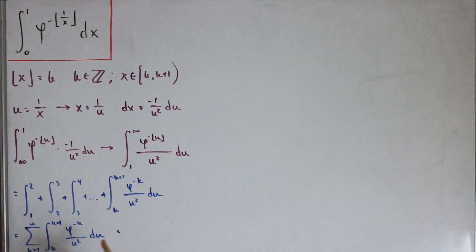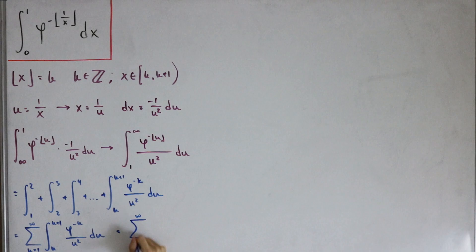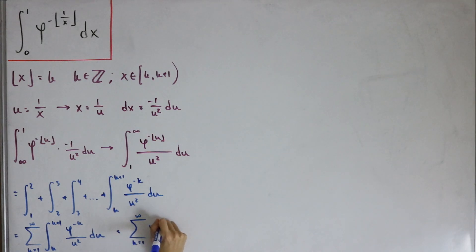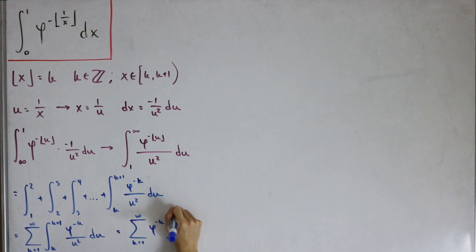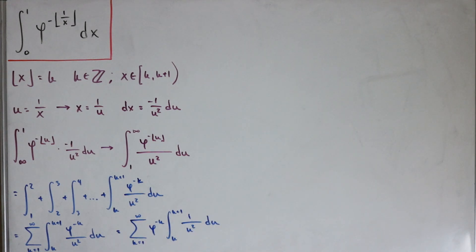Since φ^(-k) has nothing to do with u, we can factor it outside the integral. So we have the infinite sum from k=1 to infinity of φ^(-k) times the integral from k to k+1 of 1/u² du. That's a pretty easy definite integral to solve.